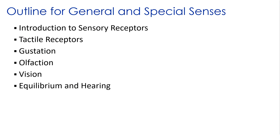In this next series of lectures, we're going to cover both the general and the special senses, which are specifically smell, taste, sight, hearing, and equilibrium. We label those as special senses because of the specialized receptors that provide those sensations, and because they're often located in complex sense organs as well.